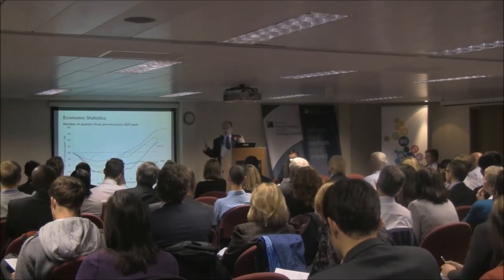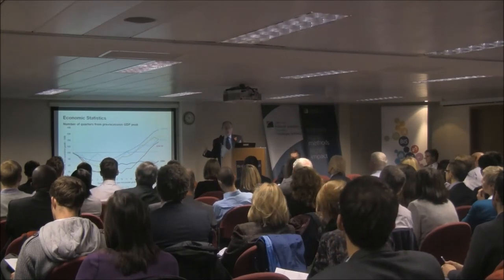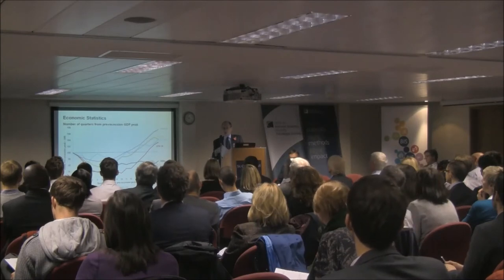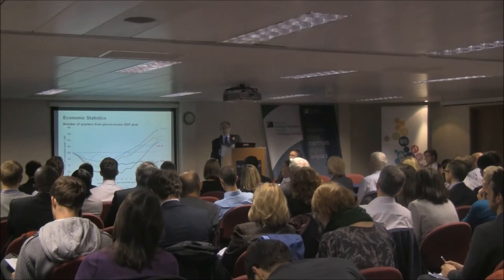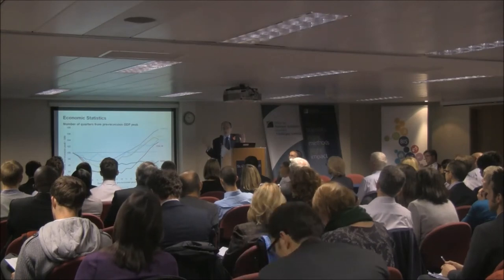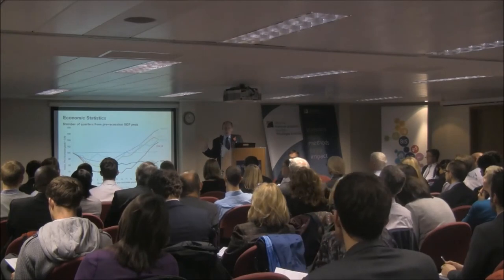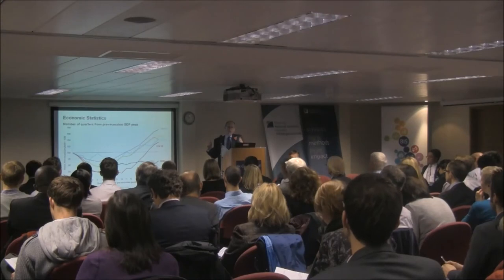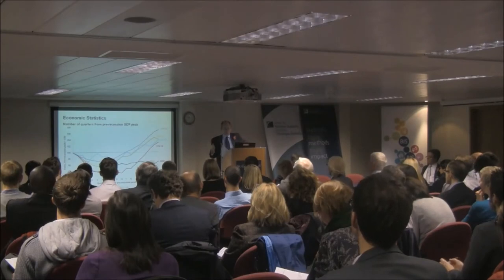If we wanted to think about what kind of recession this was, one way is how much did GDP fall. But that's not necessarily the only or most interesting way. For members of the public, what's happened to unemployment might be at least as interesting — and actually unemployment has grown massively less quickly in this recession than it did in the last two recessions. Or we might be interested in house repossessions, how happy people are feeling, or business liquidations.